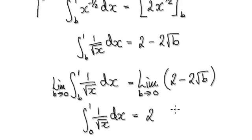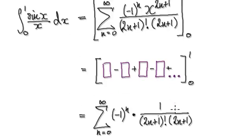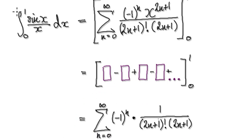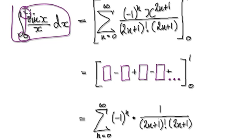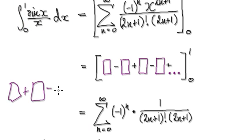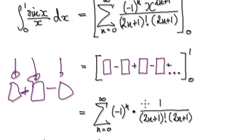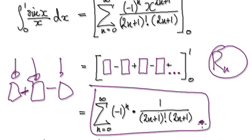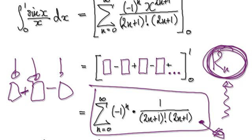So following on from the previous video, we got to this stage here — this integral from 0 to 1 is given by this. In order to work out the number of terms needed, we need to think about the remainder. And in order to make use of this remainder, we need to show that this alternating series converges.